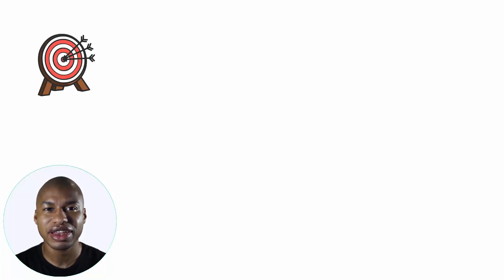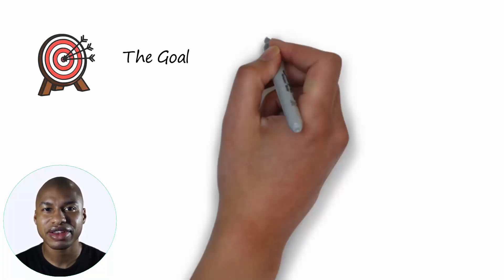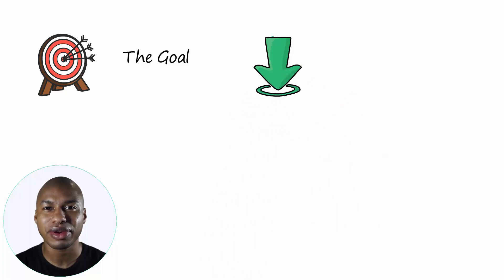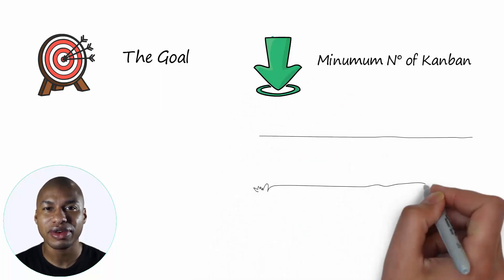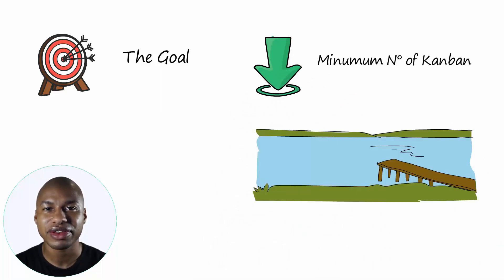The goal of a lean company is to have a minimum number of Kanban. This goal has to be reached gradually to avoid drying the water too fast and exposing the rocks.